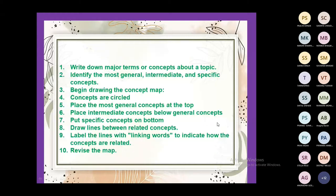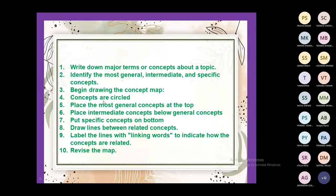Here are some steps to make a concept map. First, write down the major terms or concepts about a topic. Second, identify the most general, intermediate, and specific concepts — if you are supposed to put anything as a point, it should be interlinked; then only it belongs in the concept map. Third, begin drawing the concept map: concepts are circled — also called nodes. Place the most general concepts at the top, intermediate concepts below, and specific concepts at the bottom.